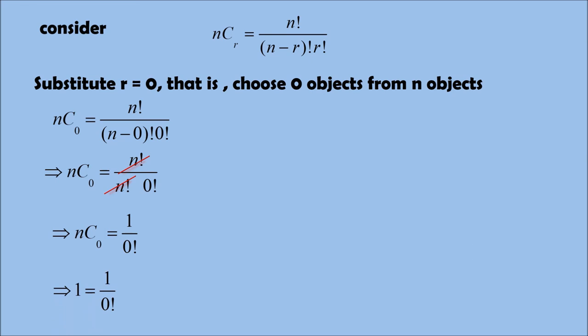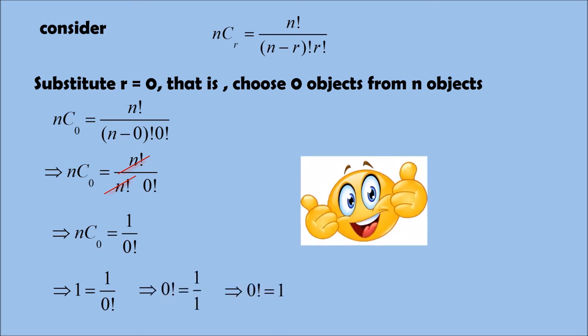1 is equal to 1 by 0 factorial because we know already nC0 is equal to 1. Take 0 factorial one side and 1 to your right hand side. So 0 factorial is equal to 1 by 1 is equal to 1. Yes, we proved.